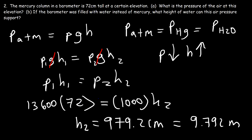As you can see, 9.792 meters is a lot taller than 72 centimeters. The reason is that mercury is extremely dense, so it doesn't have to be as high. Water is not as dense as mercury, so it requires a much greater column height.